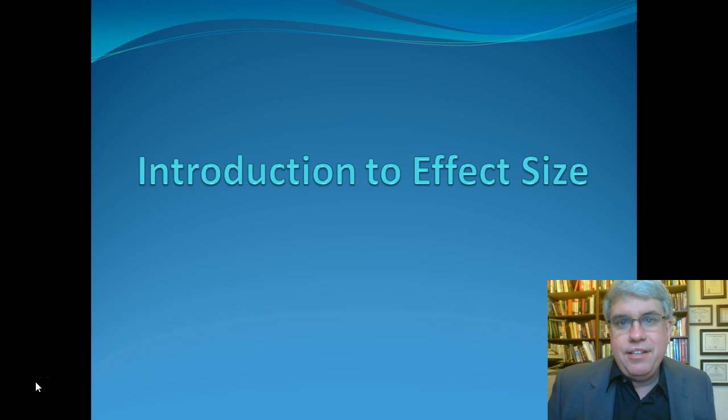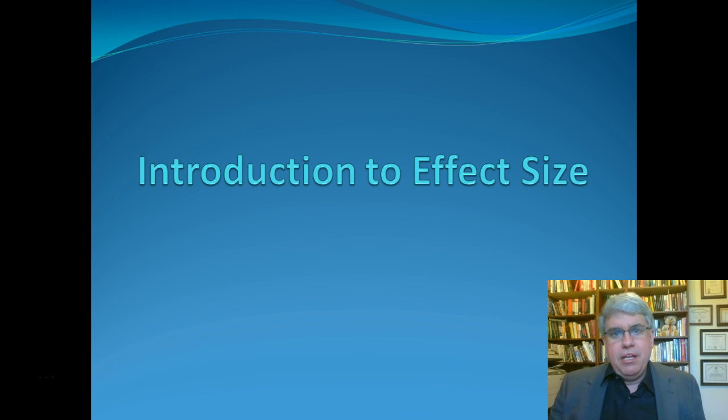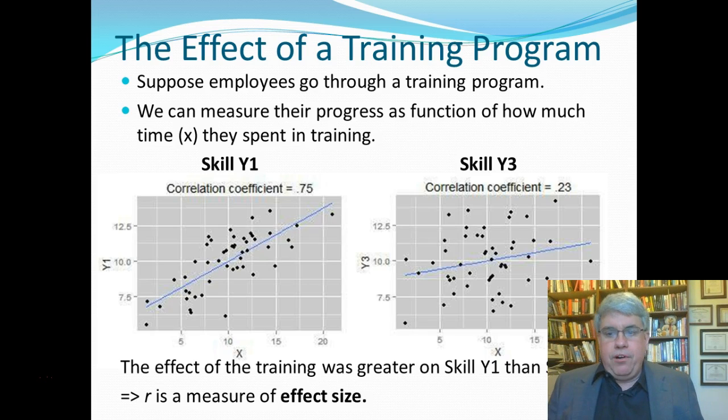Let's talk about effect size. We've been talking a lot about p-values and finding out if something is significant, but what I want to do today is talk about how big of an effect something has. This is going to be different than a p-value because a p-value basically tells us how sure that something is related to something else or how sure we are that two groups are different. It doesn't tell us how big that difference is or how strongly the things are related. That's what effect size does.